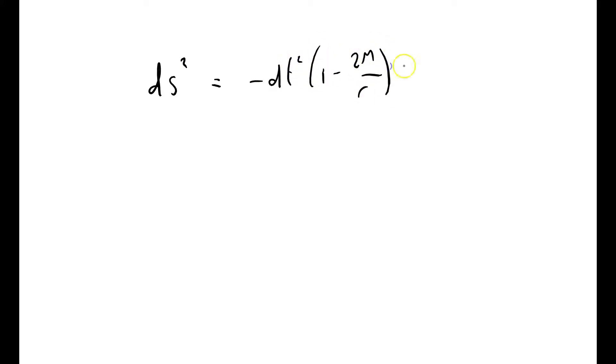1 minus 2m over r plus dr squared over 1 minus 2m over r. Oh no, it's over that. 1 minus 2m over r. I'm so annoyed by this 2m, I got it wrong.